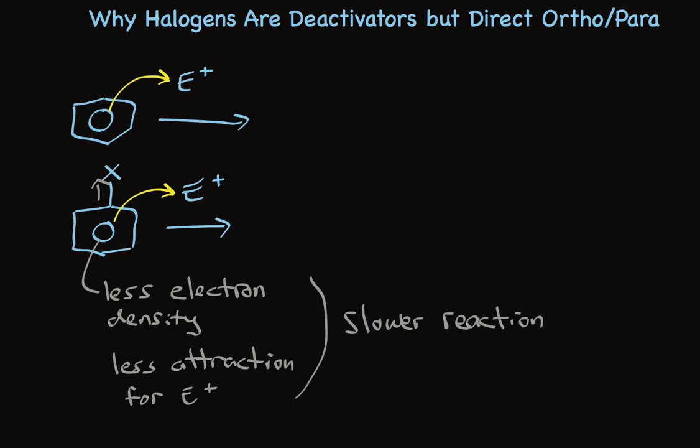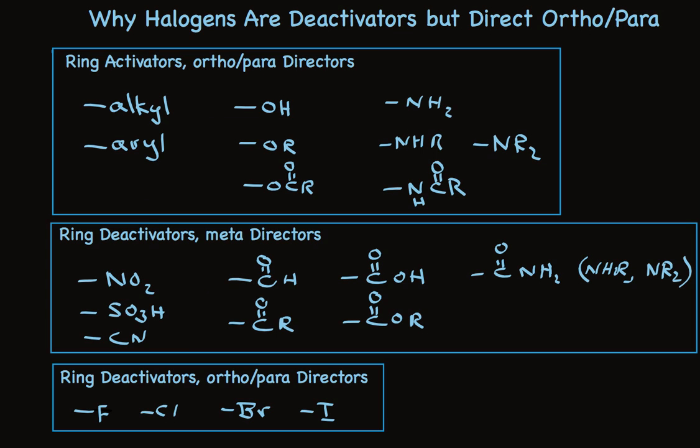Let's go back and take a look at that chart again. The alkyl and aryl groups donate electrons by induction, but all of the other substituents in the ring-activators ortho para directors are electron-donating by resonance. They all have at least one unshared pair on the heteroatom that can be shared with the pi system increasing electron density in the aromatic ring.